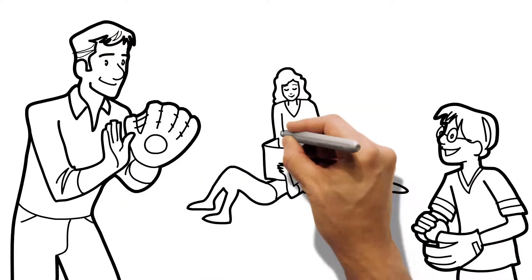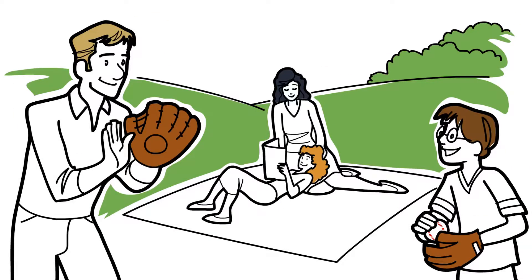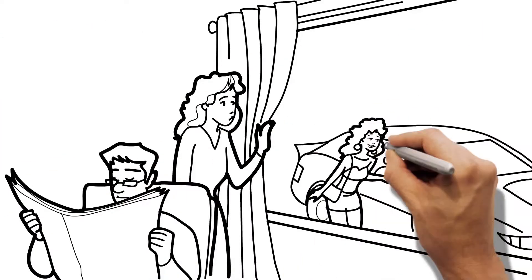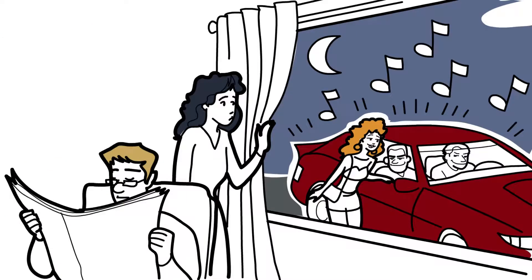We want to provide the best for our families. We want to give them a happy and secure childhood. But our lives don't stand still, and as they grow, our loved ones are influenced by others, and not always for the better.